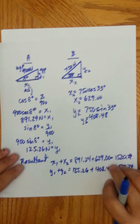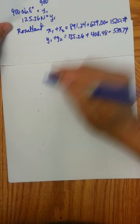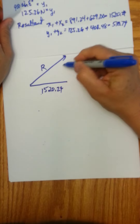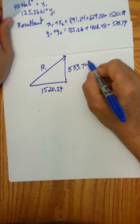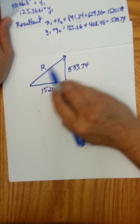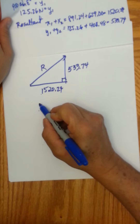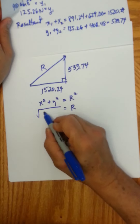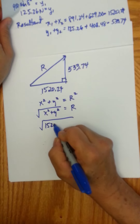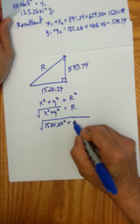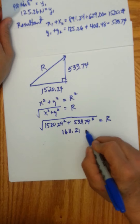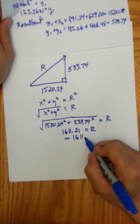So the idea is we now have a new resultant vector R, which has a horizontal component of 1520.24 and a vertical component of 533.74. To find the magnitude or the length of this resultant, we use the Pythagorean theorem: R equals the square root of x² plus y². Taking the square root of 1520.24 squared plus 533.74 squared gives us 1611.21 newtons.